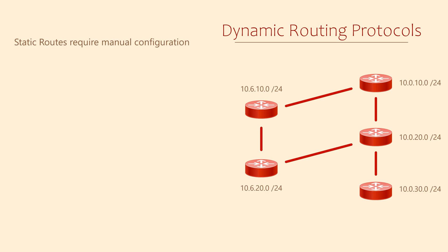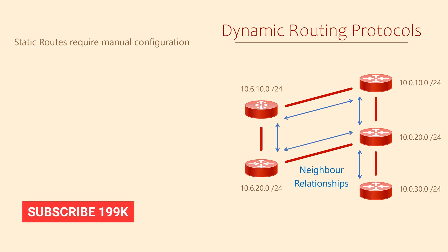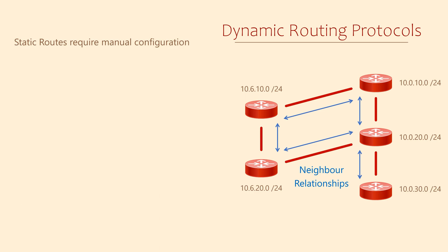Dynamic routing protocols have a different approach. Routers running one of these protocols will find other connected routers — we call these neighbours or peers. The router does this by sending out hello messages on its interfaces. When it gets a hello in response, it knows there's another router there. These routers then form a neighbour relationship, which they use to share information about the subnets they know and how to get there.